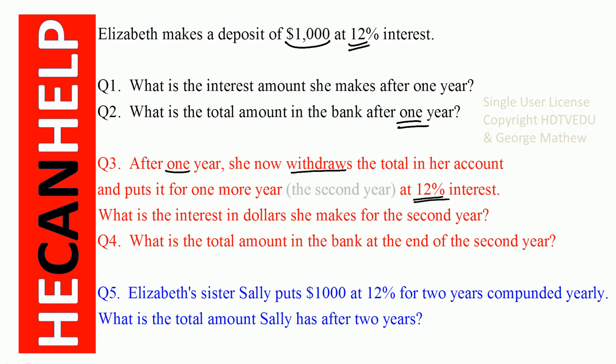Question number five: Elizabeth's sister Sally puts $1,000 at 12% for two years, compounded yearly. What is the total amount Sally has after two years?